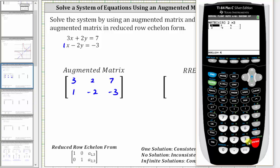Now we enter the elements. So we enter three, enter, two, enter, seven, enter, one, enter, negative two, enter, negative three, enter.